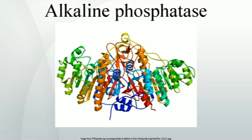Leukocyte alkaline phosphatase (LAP) is found within white blood cells. White blood cell levels of LAP can help in the diagnosis of certain conditions. Higher levels are seen in polycythemia vera, essential thrombocytosis, primary myelofibrosis, and the leukemoid reaction. Lower levels are found in chronic myelogenous leukemia, paroxysmal nocturnal haemoglobinuria, and acute myelogenous leukemia.